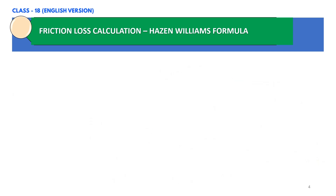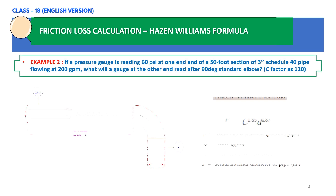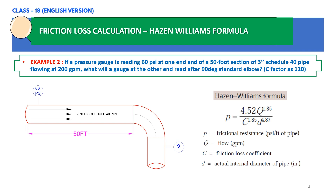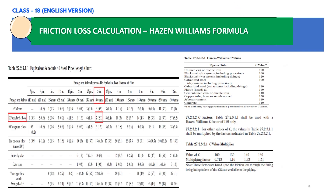Now let's look at our second example, which includes one elbow along with the straight pipe. We shall calculate the pressure reading after the elbow. As per NFPA 13 Table 27.2.3.1.1, we have an equivalent schedule 40 steel pipe length chart. In our example we have a 90-degree standard elbow, and for a 3-inch pipe the equivalent length from this chart is 7 feet.